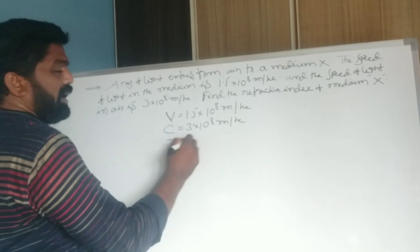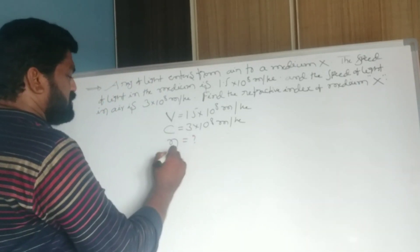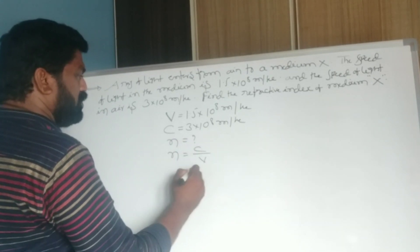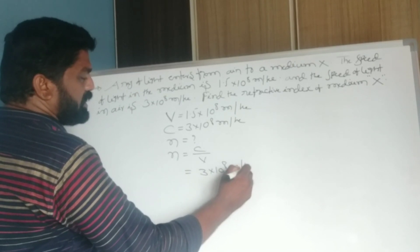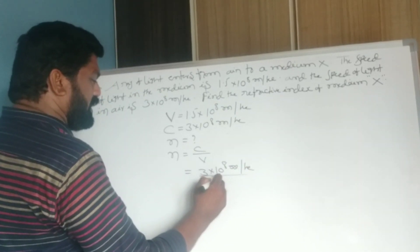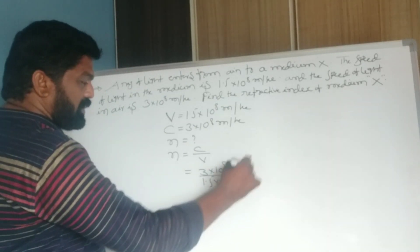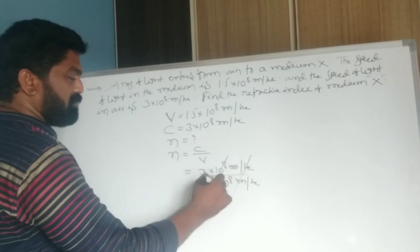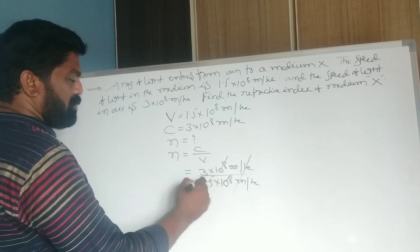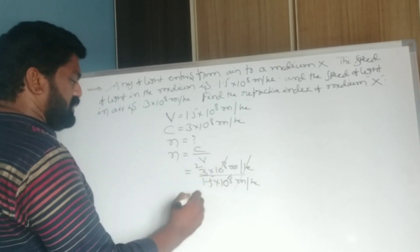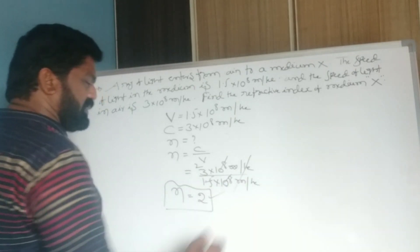Now we can find the refractive index of medium X using n = C/V. So n = (3 × 10⁸) / (1.5 × 10⁸). The meters per second and 10⁸ cancel, giving 3/1.5 = 2. The refractive index of medium X is 2.